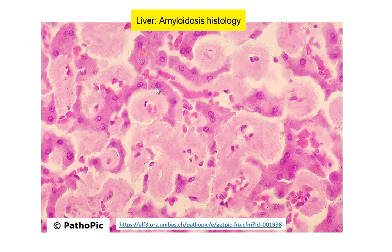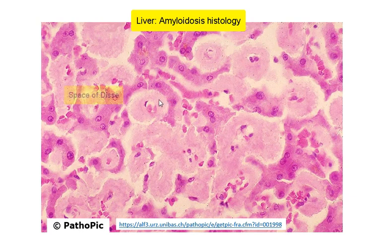These are the residual hepatic cords — you can see this here. The hepatocytes themselves are quite atrophic because they have been compressed by these amorphous, pale, pinkish amyloid deposits. You can see, for example, this hepatocyte, this hepatocyte — they're really encroached upon by the amyloid. And the amyloid deposits are found in the space of Disse, meaning that they are between the hepatocytes and the sinusoids.